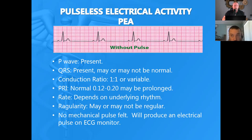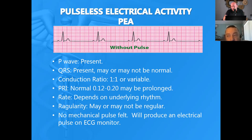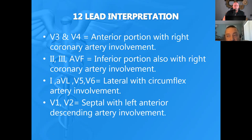Now we have this beautiful rhythm: P waves upright, normal, QRS complexes, one-to-one conduction ratio, everything regular — but we reach down for a pulse and there's no pulse. What do we call this? Pulseless electrical activity — PEA. When you have that nice rhythm on the monitor but they have no pulse, the electricity is flowing through the heart but it's not contracting hard enough to produce a pulse.